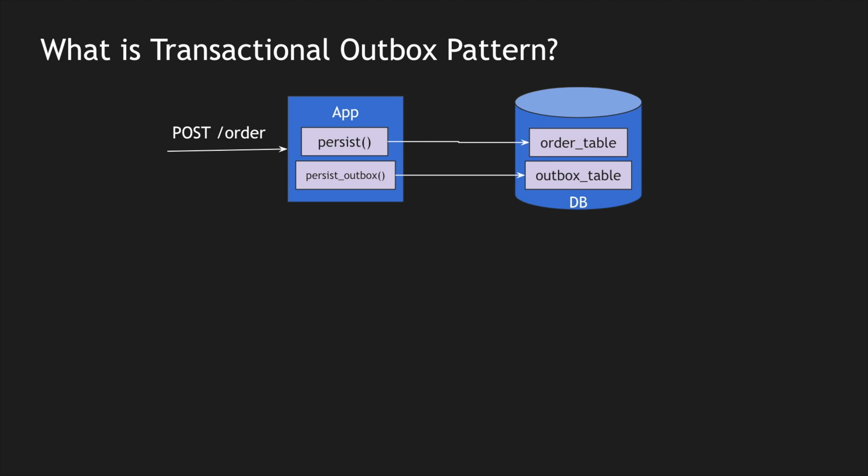If there is a database connection failure, the POST endpoint will fail consistently because both the main record and the outbox record would fail together. There is no integration from the persist-outbox flow to any other system. So the POST is quick: it creates a new order and adds one more record in a separate table with the order ID and the publication status.